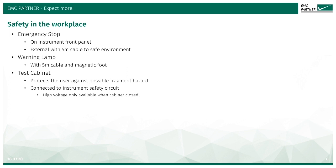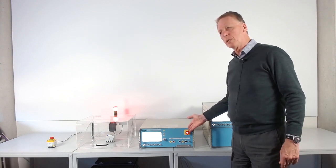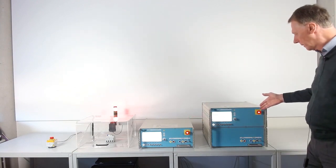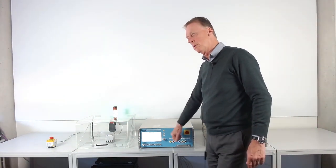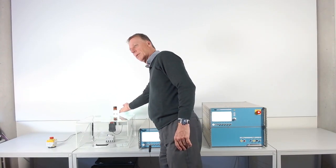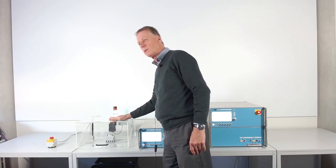To increase personnel safety in the test place, EMC partner have added on the immunity generators emergency stops. Also, the ability to add a warning lamp and a test cabinet can be included in the case of an EUT that could present a fragmentation hazard. The IMU generators are equipped with the emergency stop on the front panel, which turns off all high voltage circuits and immediately sends the warning lamp to green indicating the test circuit is safe.